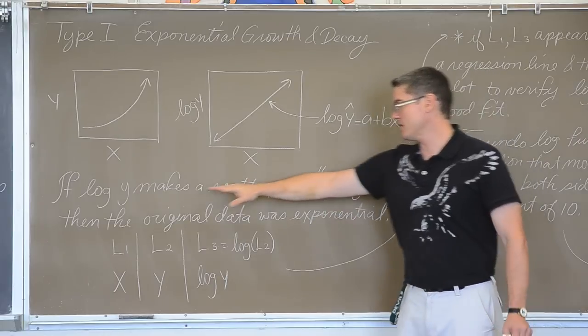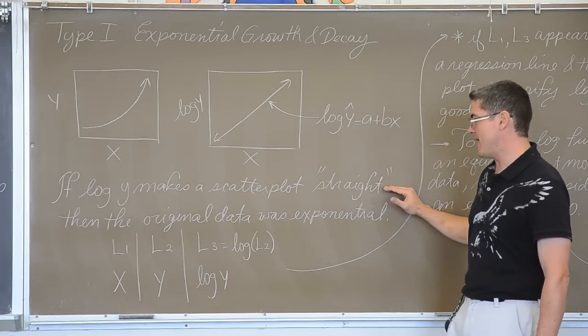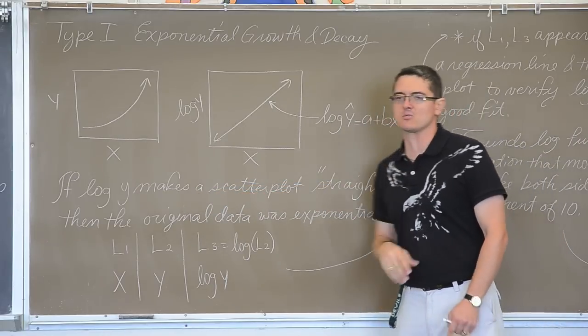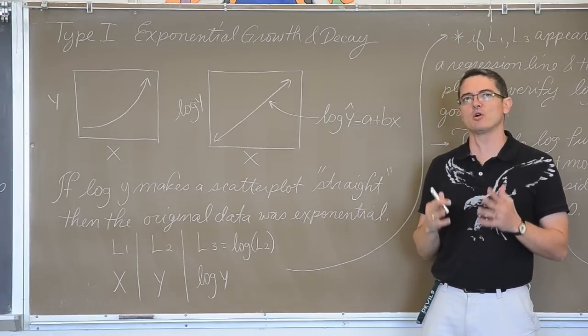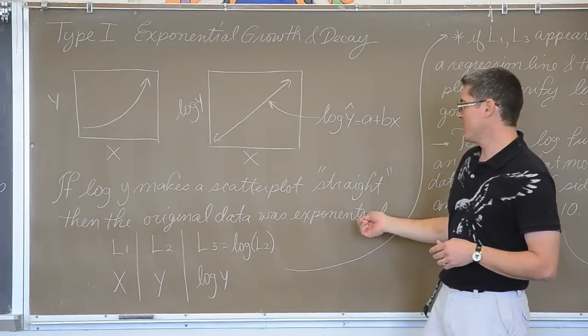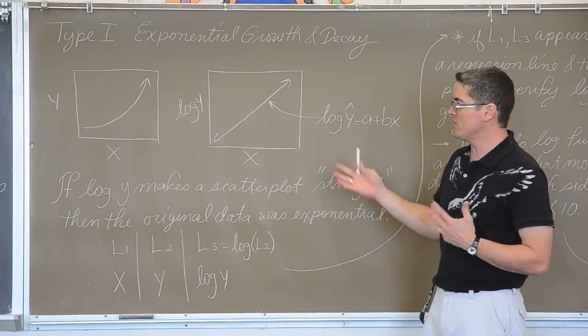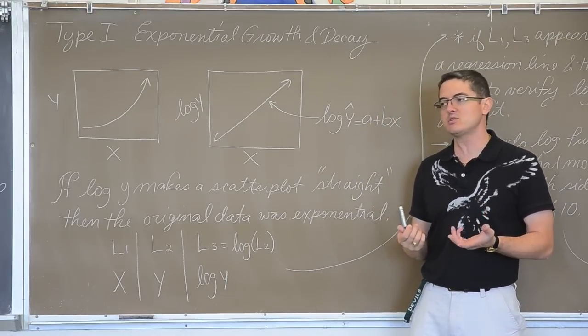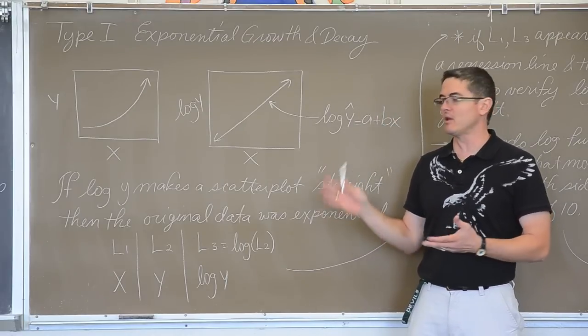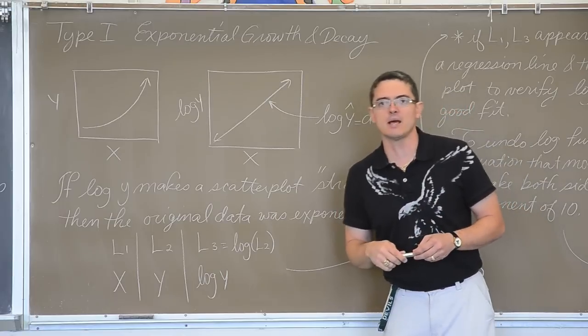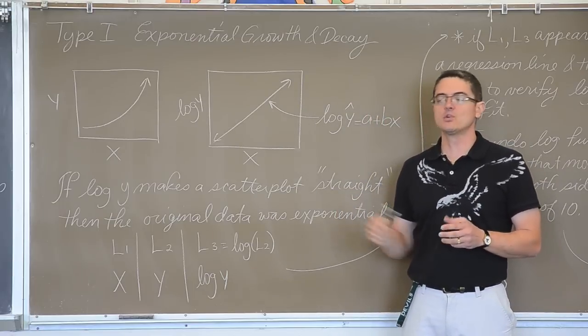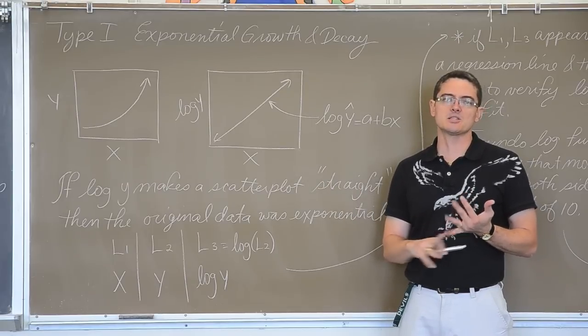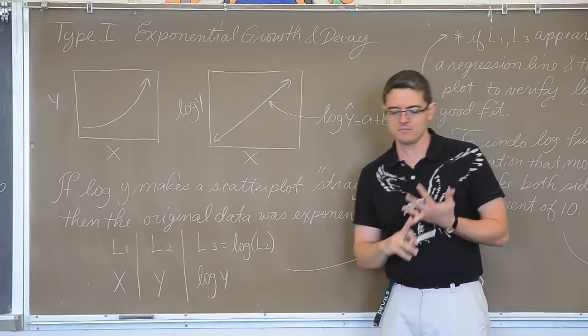So if logging the y makes the scatter plot straight, and I put this in quotation marks because we're dealing with real data and the idea of perfectly straight is just not going to happen, then the original data was exponential. Now, my notes are in the form of using 83's and 84's, which is what my students use. I will show you an example on the calculator, probably get that posted tomorrow, about doing these transformations with both a TI-Inspire and a TI-84.